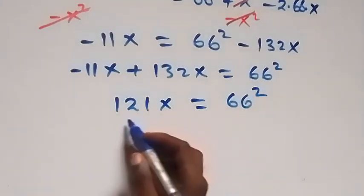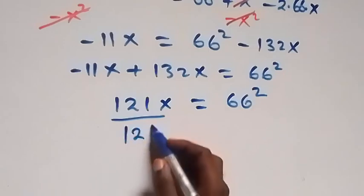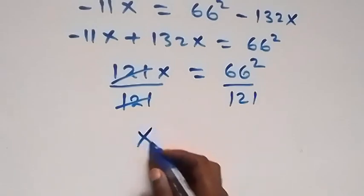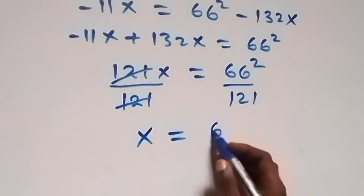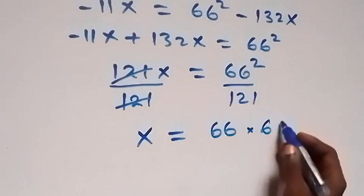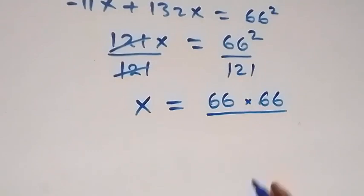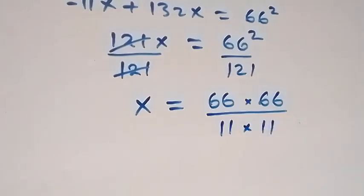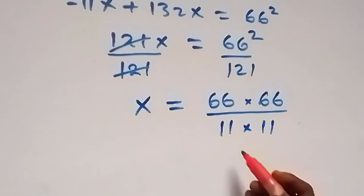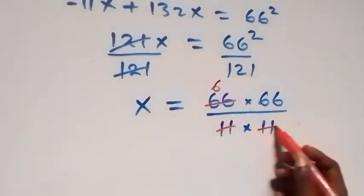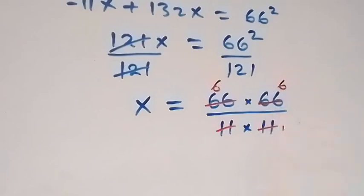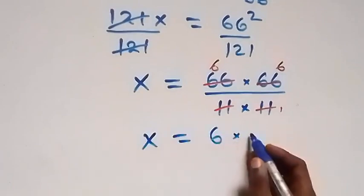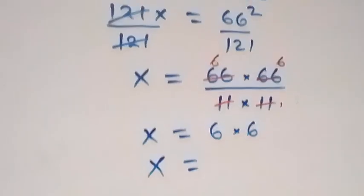Then here we divide both sides by 121, so we have over 121 on both sides. Here 121 cancels, and we have x equals to 66 squared divided by 121. That can be written as 66 multiplied by 66 divided by 121, and we can write 121 as 11 times 11. Then 11 goes into 66 six times on both, so what we have left is x equals to 6 times 6, which implies x equals to 36.